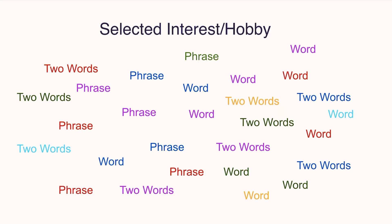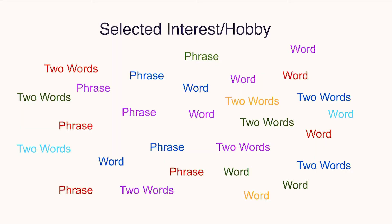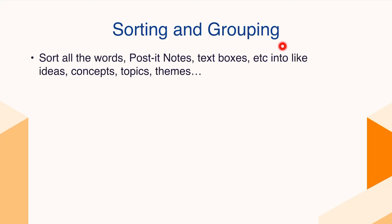Now you've got all these different words, phrases, and maybe some groupings. You've got your selected topic and all the words you came up with with your partner. Here's what to do next: sort and group all the words — the post-it notes, the text boxes, whatever you used — into separate groupings of like items, like concepts, common topics. Rearrange them so things that seem to associate together are grouped.